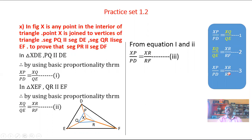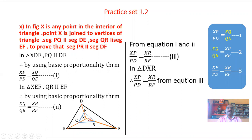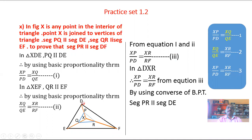From equation number 3, XP over PD is equal to XR over RF. By the converse of the BPT theorem, since this ratio is equal, we can say that PR is parallel to DF. Hence it is proved that segment PR is parallel to segment DF.